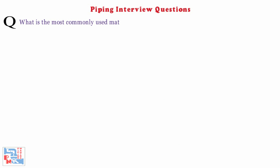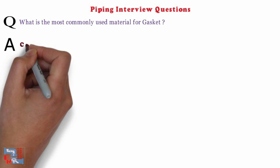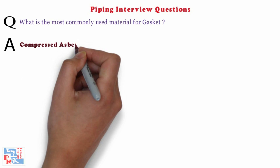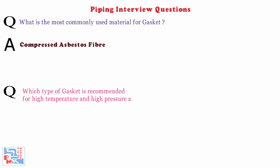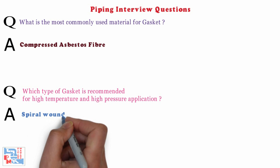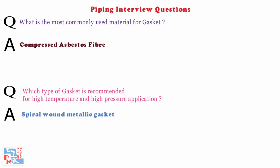Next: what is the most commonly used material for gaskets? Compressed asbestos fiber. Next: which type of gasket is recommended for high temperature and high pressure applications? Spiral wound metallic gasket.